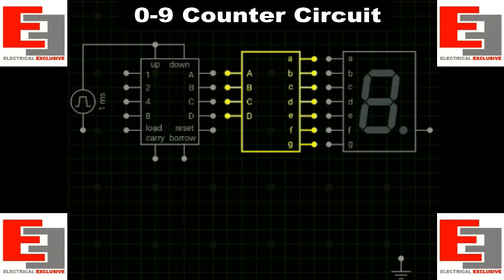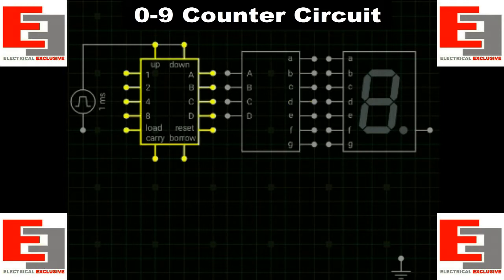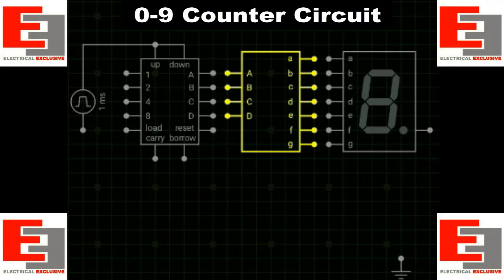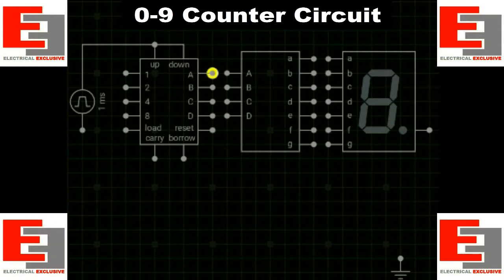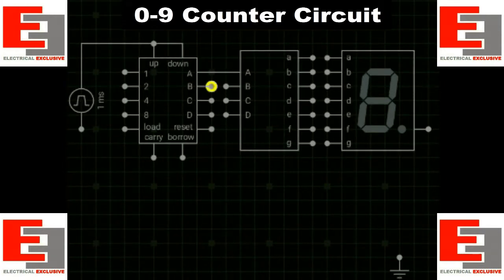The counter has 4 outputs: A, B, C, and D, excluding the reset terminal. The 7-segment decoder also has 4 inputs: A, B, C, and D. All we have to do is connect the A terminal to A, and B to B.